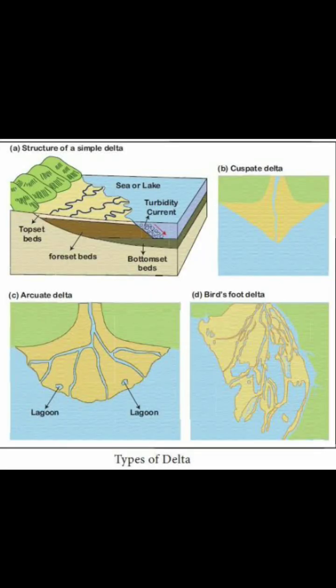Deltas can come in different shapes, like triangular, arcuate, or bird's foot, depending on the water flow and sediment type. Some famous examples include the Nile Delta in Egypt and the Mississippi River Delta in the United States, both rich in biodiversity and human activity. Deltas are vital ecosystems and important for agriculture and wildlife.